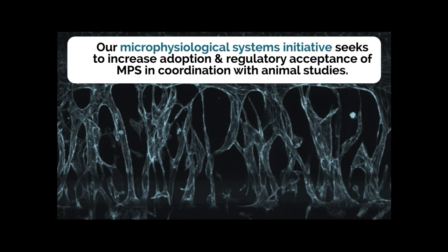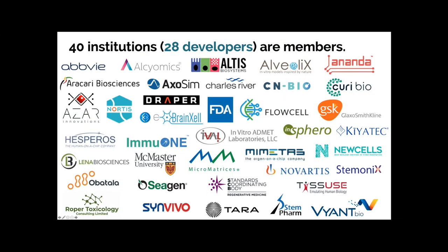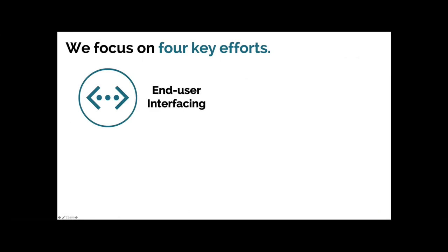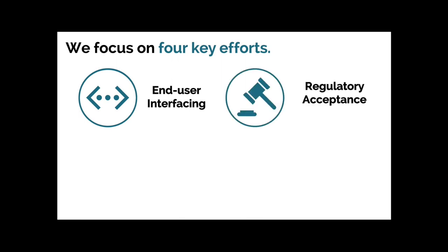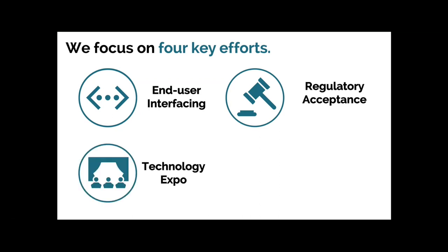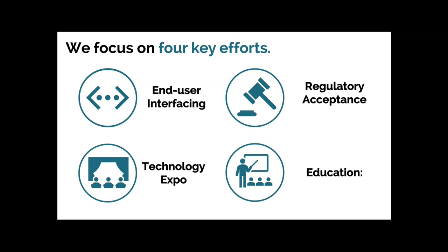We look for initiatives that have ample evidence of being a strong 3R strategy that will make big impact in the field and ultimately are practical to implement. We truly believe that microphysiological systems fall into this category — they have strong evidence, will make a big impact, and will be practical. Our initiative seeks to increase adoption and regulatory acceptance of MPS in coordination with animal studies. Our NA3RC MPS initiative includes 40 different institutions, 28 of whom are developers.